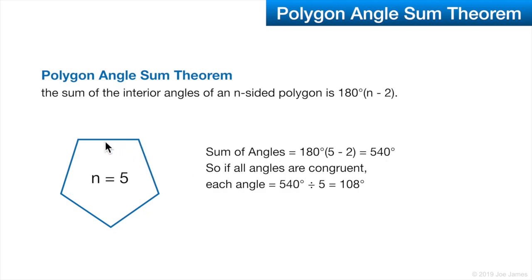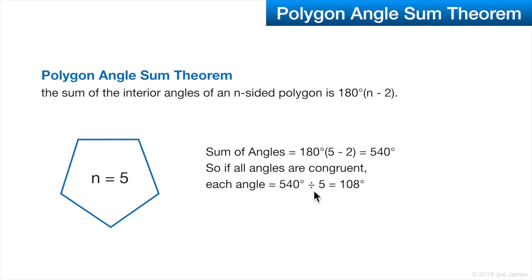It has five angles — that's all that matters. It doesn't matter if the sides are different lengths, the angles are different measures, or whether this is a regular or irregular polygon. The angles still sum to 540 degrees. Since this is a regular polygon, all five angles are equal, so we divide by five to get 108 degrees each.